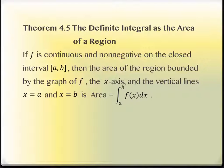The definite integral as an area of a region. If f is continuous and non-negative over this closed interval from a to b, then the area from the graph down to the x-axis and from the vertical line at x equal a to the vertical line at x equal b is the area under the curve. And it's a definite integral because it has this a and this b on the top and the bottom.